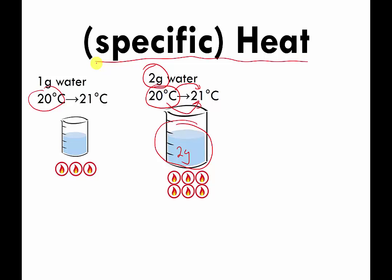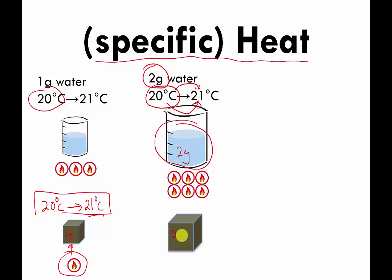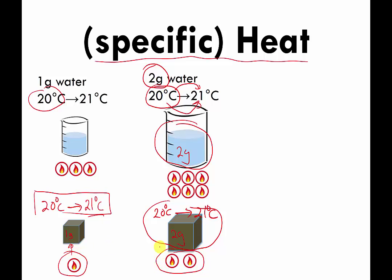Here's the second thought experiment: imagine I have a piece of metal that also weighs one gram, also at 20 degrees Celsius, and I also want to raise the temperature of my little block of metal by one degree Celsius to 21 degrees. Using the same candles, it only takes one candle to raise the temperature of one gram of metal by one degree Celsius. If I have two grams of metal and want to raise it to 21 degrees, the answer is two candles — twice as much metal, twice as many candles.